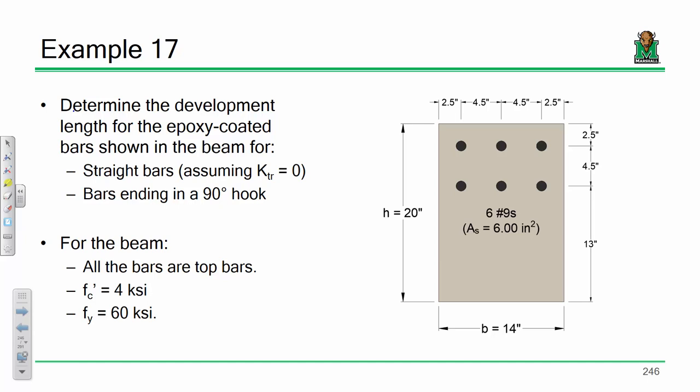Here is a final development length example. I'm going to take polar opposites to really show what can happen on the development length side. We're going to do this problem two ways: assuming straight bars with KTR of zero, and then assuming bars ending in a 90-degree hook. We've got 4 KSI concrete, 60 KSI steel. All of the bars are top bars — even these ones down here — because you've got more than 12 inches of concrete below. So these are all top bar factors. Also, these are epoxy coated bars, which is going to affect things.